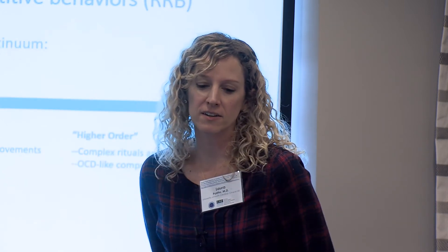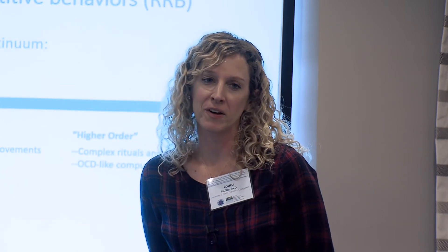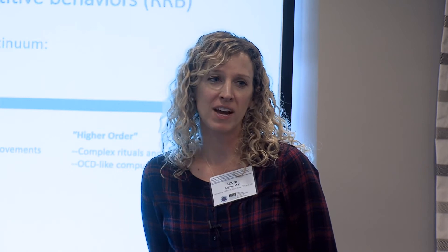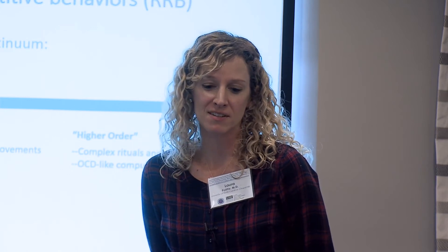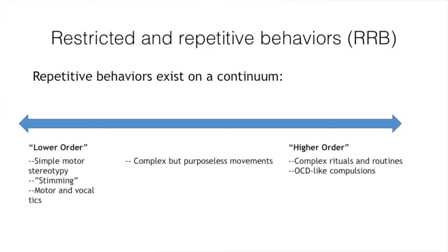All behaviors exist on a continuum, and at some point we draw an arbitrary line and say we call it one thing and not another. But these are behaviors that exist in nature to varying degrees, and in autism to varying degrees also.